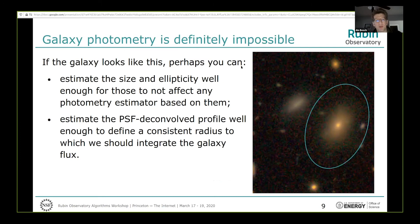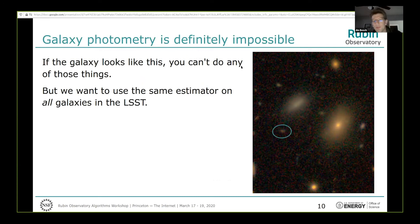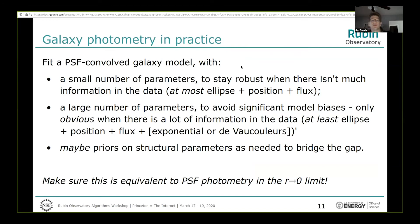Galaxy photometry is definitely impossible. For a big, well-resolved galaxy, you can imagine estimating size and ellipticity well enough that the biases are subdominant when deriving a photometry estimator. You also need to estimate the PSF-convolved profile well enough to define a consistent radius at which to integrate the flux. But for a faint galaxy, you can't do those things — there just isn't enough information to constrain the size, shape, and profile. For a multi-purpose survey like LSST, we want to use the same estimator on all galaxies.